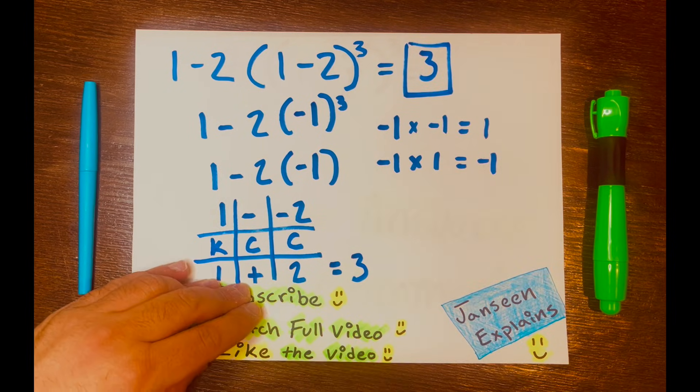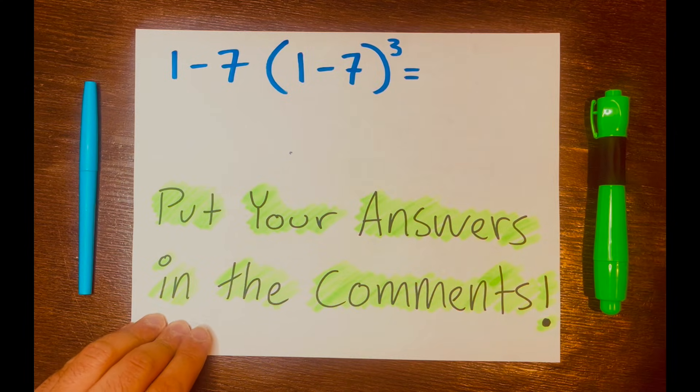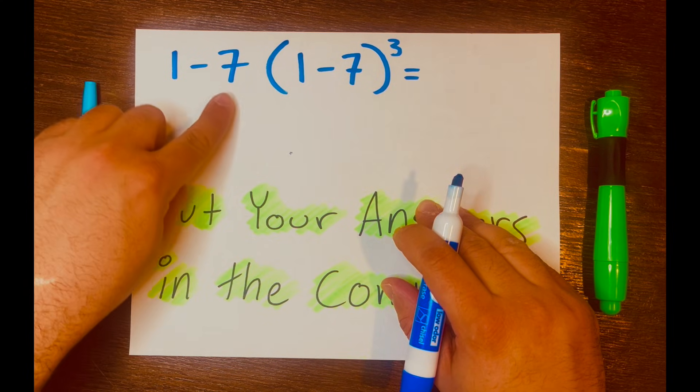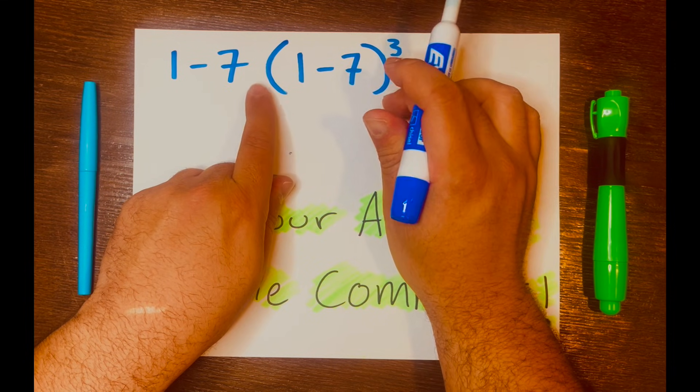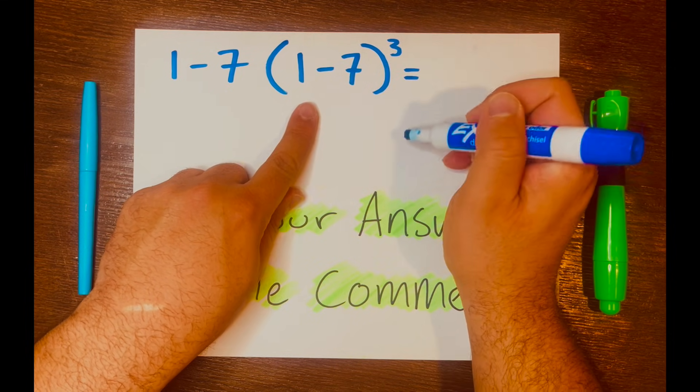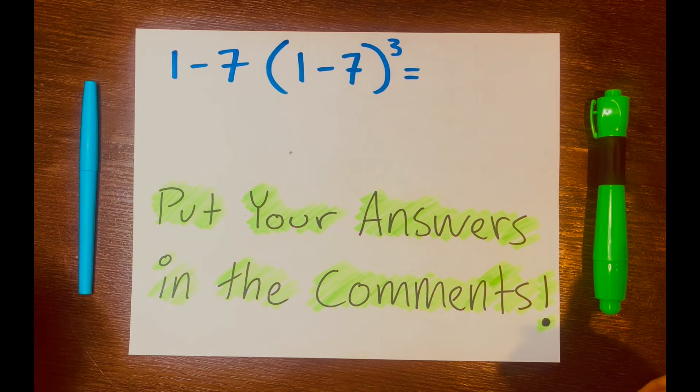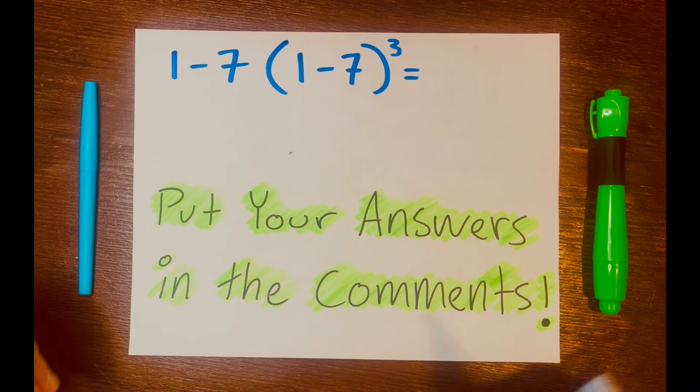And there you go. Now go ahead and solve this math problem: 1 minus 7, and then 1 minus 7 inside these parentheses with an exponent of 3. Put your answers in the comment section down below. And thank you for watching, and I'll see you in the next video.